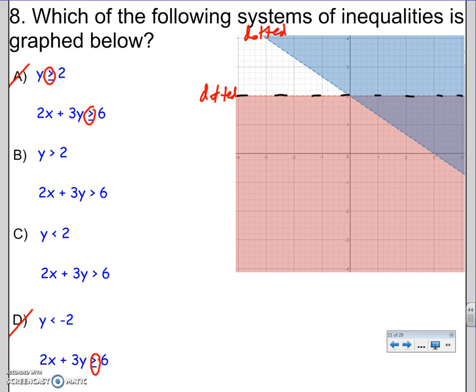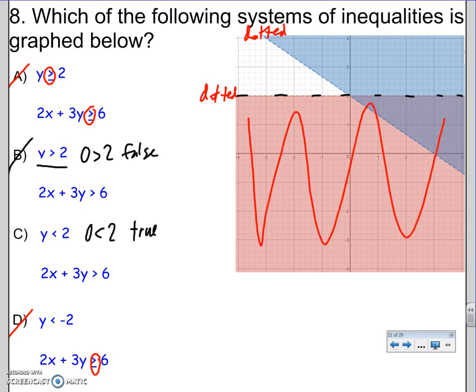The test point 0, 0 should be true. Because it's the red line shaded below. So I'm playing 0, 0 here. 0 is greater than 2. That's false. So if I graph this one here for real. I should have shaded up. That's out. Down here. 0 less than 2. That's true. That's why they shaded below. They shaded all this down here. So we want it to be true. So the answer is C.